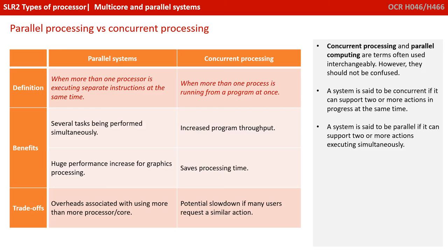Another issue sometimes asked about is the difference between parallel processing and concurrent processing. These terms are often used interchangeably, however they shouldn't be confused. A system is said to be concurrent if it can support two or more actions in progress at the same time. A system is said to be parallel if it can support two or more actions executing simultaneously.